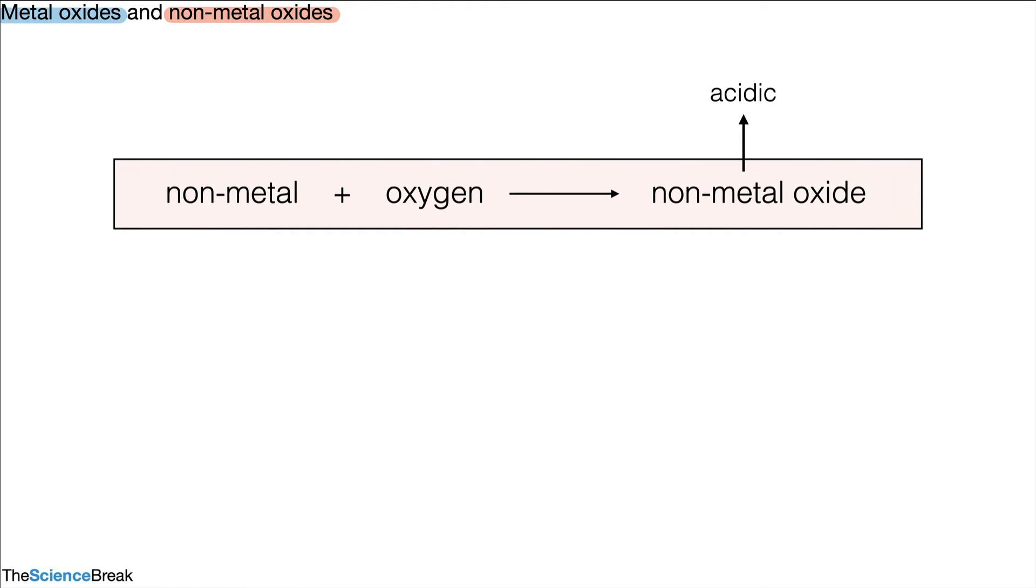So non-metal oxides can form acids. We've got non-metal plus oxygen gives us a non-metal oxide, and we describe that non-metal oxide as acidic. In our example there the non-metal oxide was a gas, and this forms acid when reacting with water. We can put a little box around that because that's quite important.